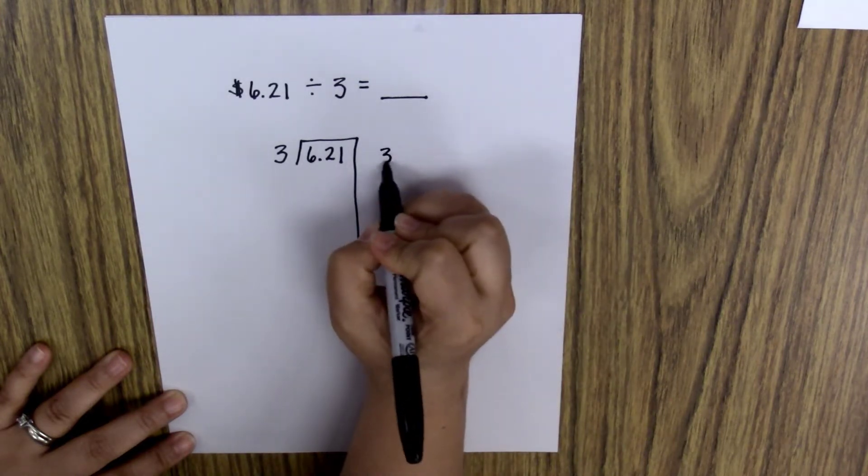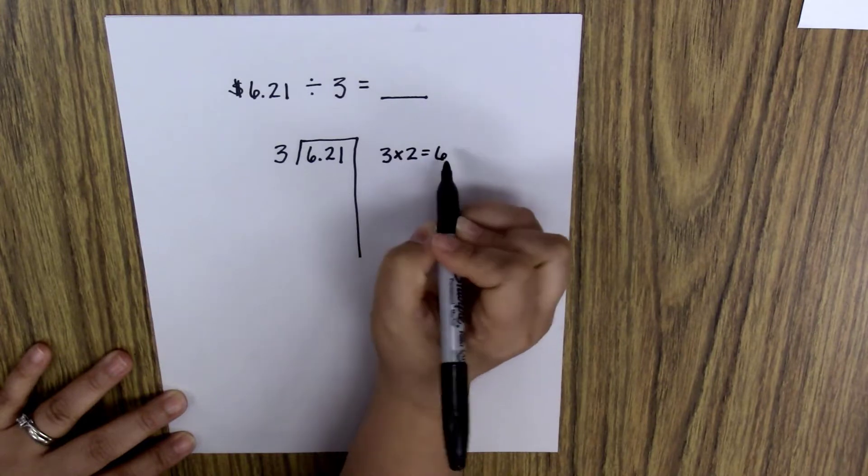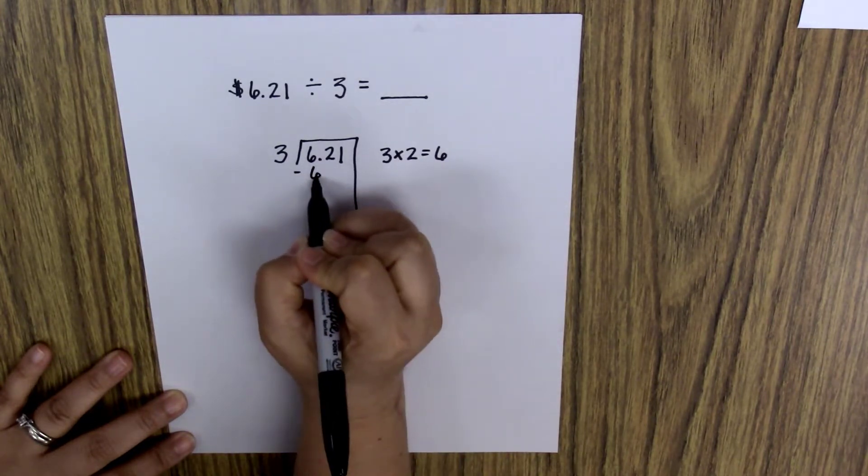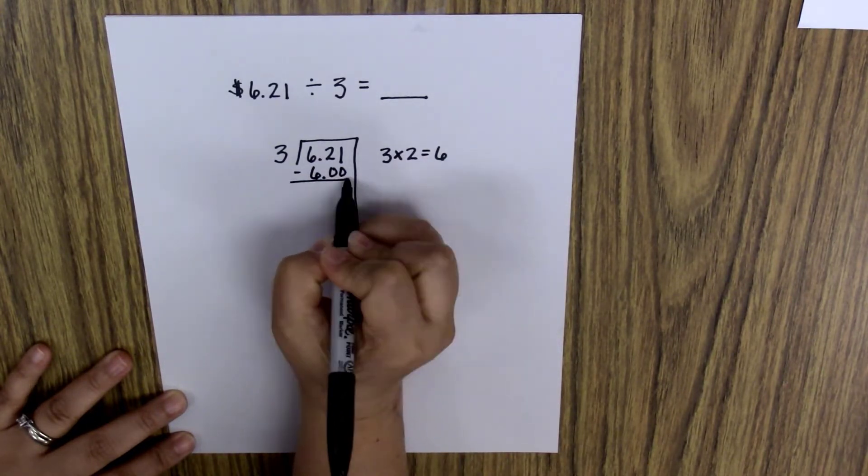Since I know that three times two equals six, I can take $6 out of my $6.21.